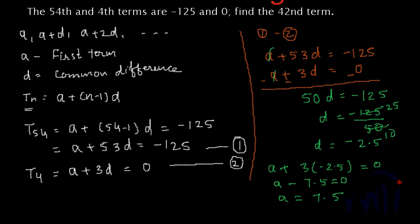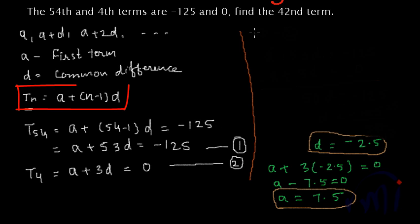Yes, so we have got the value of a which is 7.5 and we have got the value of d which is -2.5 and then we are asked to find the value of 42nd term. And what will be 42nd term? 42nd term that is t42 will be a plus (n-1)d.